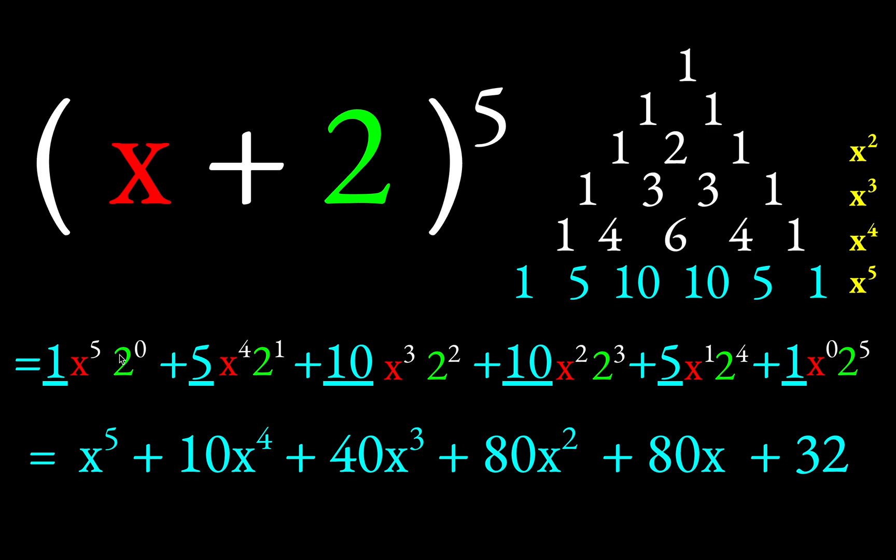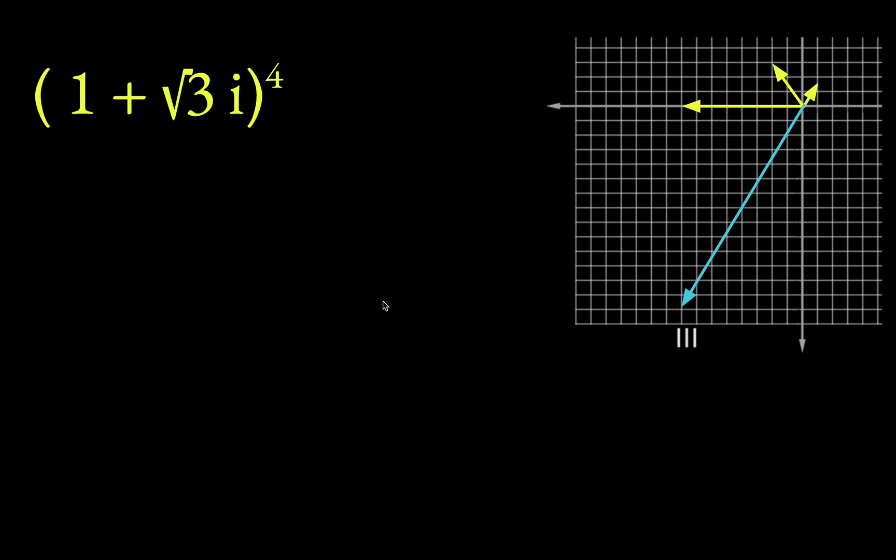And then enter the terms from the binomial with the exponents changing in this pattern. So this pattern actually works for complex numbers as well.